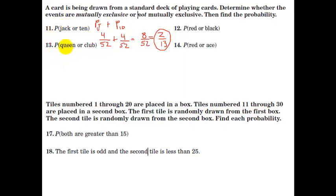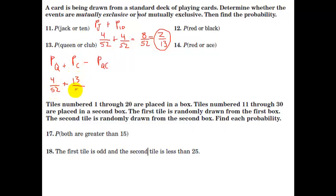For a queen or a club: these are not mutually exclusive because you might draw the queen of clubs. So we do the probability of a queen plus the probability of a club, minus the probability of a queen of clubs to avoid double counting. The probability of a queen is four out of fifty-two, a club is thirteen out of fifty-two, and we subtract one out of fifty-two. That gives sixteen out of fifty-two, which reduces to four out of thirteen.